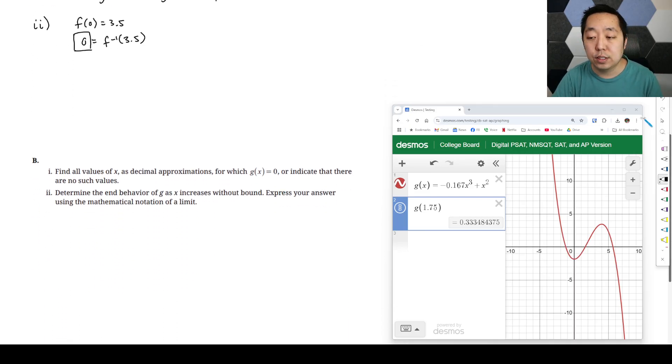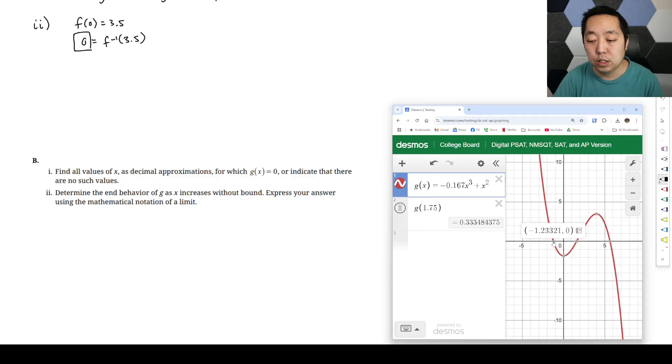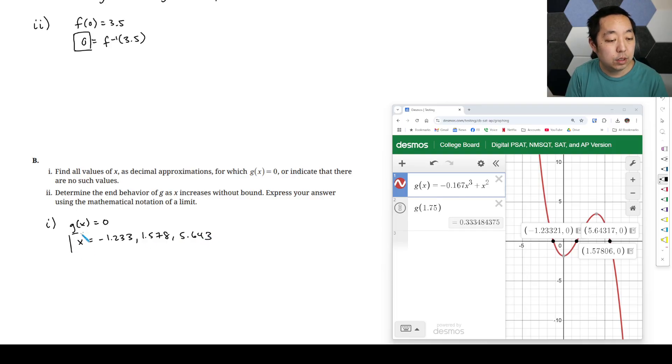Find all values of x as decimal approximations for g of x equals 0. Well, it's pretty easy on the Desmos. You can use those are the three locations here. So you would say g of x equals 0. And then just write the points negative 1.233, 1.578, and then 5.643.